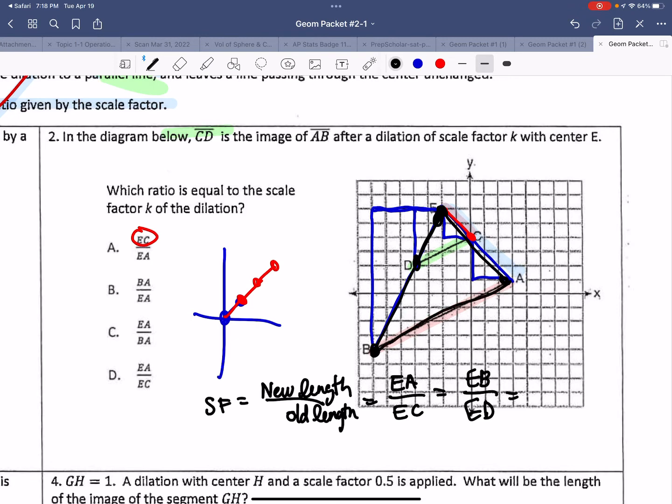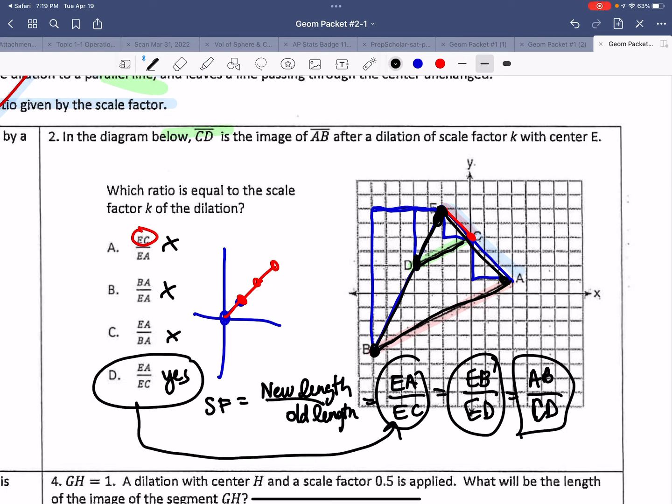I could have also put this new length, AB, divide by the old length, CD. So I look over here, and I see if I can find any of these in my answer. Hmm, I don't see it. So EC divided by EA. No. BA divided by EA. No. No. EA divided by BA. No. EA divided by EC. Yes. All right. That's actually the first one I mentioned. I didn't see it.